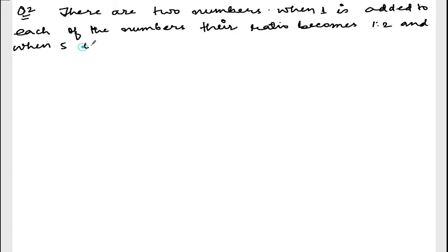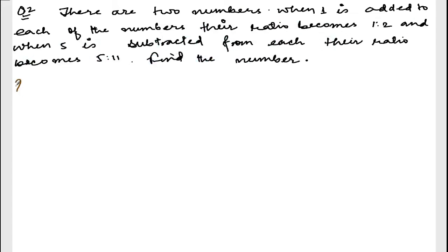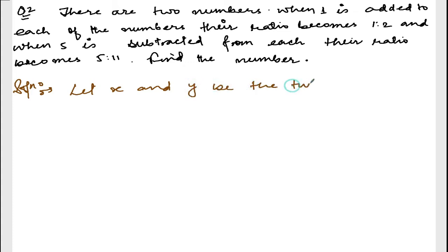We are doing exercise 4.3, question number two. The question says: there are two numbers; when one is added to each of the numbers the ratio becomes 1 is to 2, and when five is subtracted from each number the ratio becomes 5 is to 11. Find the numbers. First step: let x and y be the two required numbers.